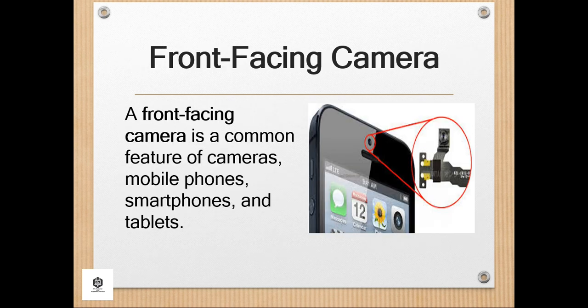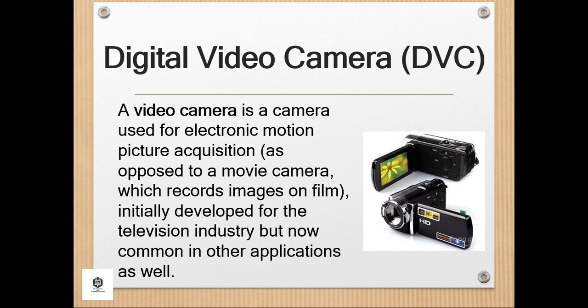Next is the digital video camera or DVC. A video camera is a camera used for electronic motion picture acquisition, which records images on film, initially developed for the television industry, but now common in other applications as well. Video cameras are used primarily in two modes. The first, characteristic of much early broadcasting, is live television, where the camera feeds real-time images directly to a screen for immediate observation. A few cameras still serve live television production, but most live connections are for security, military or tactical, and industrial operations, where remote viewing is required.